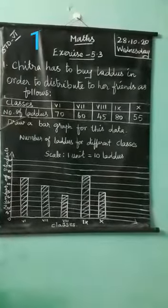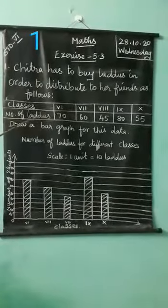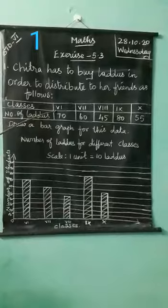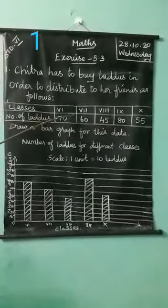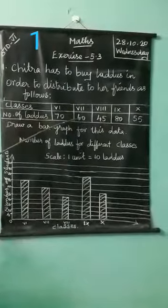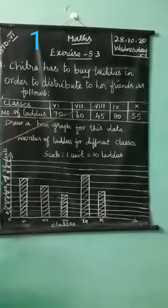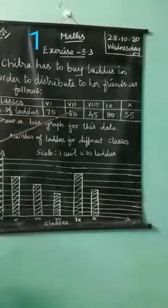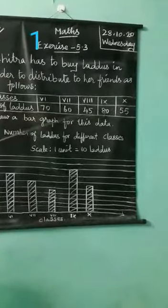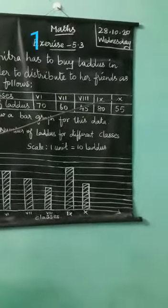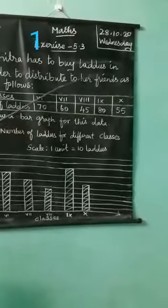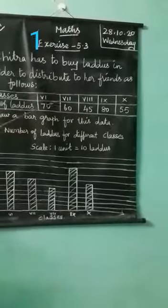Number of laddoos: in 6th standard, 70 laddoos were distributed. 7th standard — 60 laddoos. 8th standard — 45 laddoos. 9th standard — 80 laddoos. 10th standard — 55 laddoos.